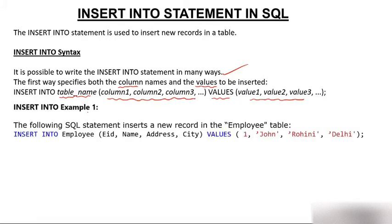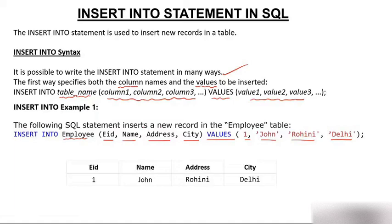Let's see the first example. The following SQL statement inserts a new record in the employee table, which we have already created prior to this video. I request you to kindly watch the create table video. INSERT INTO employee table — there were four columns: employee ID, name, address, and city — and the values are: 1, John, Rohini, and Delhi. After execution, the table will have the row: employee ID = 1, name = John, address = Rohini, city = Delhi.